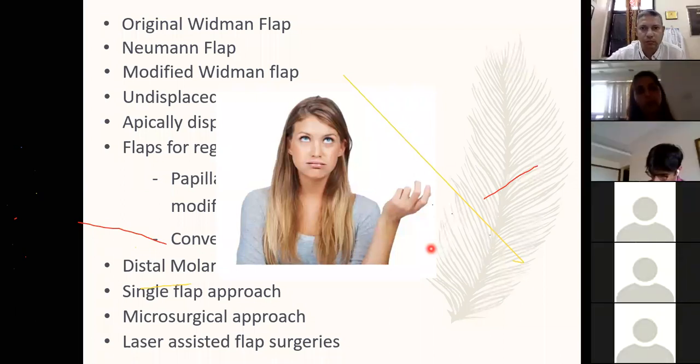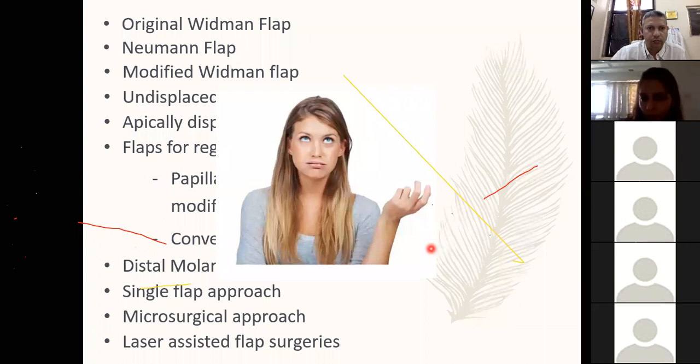All of these parameters will dictate the nature of periodontal surgery you need to perform. You need to plan your surgeries well in advance, diagnose your condition, know which objective will be your mainstay, and then plan your surgery. More often than not, it is a combination of one or two surgeries that you may have to do in a particular quadrant to achieve a successful outcome.